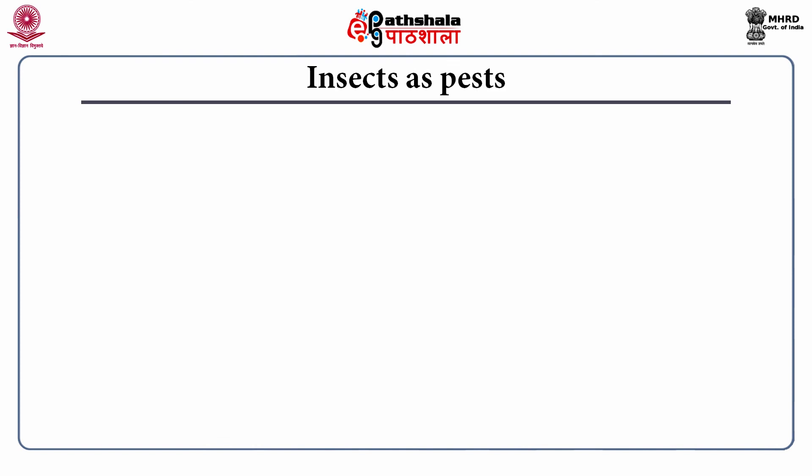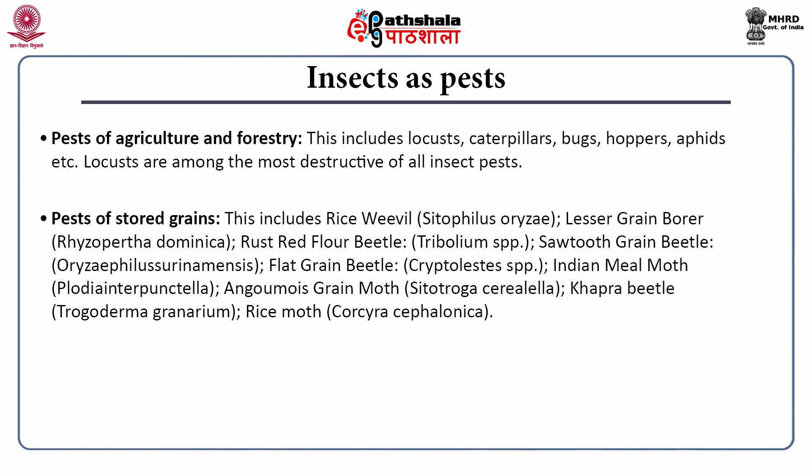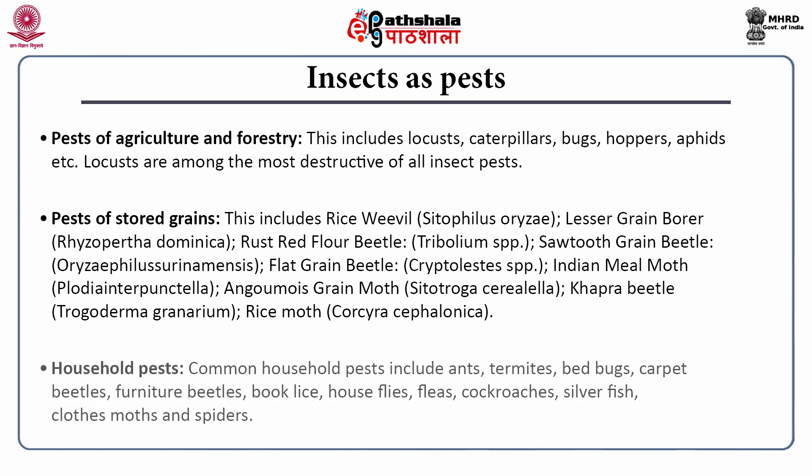Insects are also harmful and, as pests, are a serious menace to society and agriculture. Pests of agriculture and forestry mostly include those from Lepidoptera and Dipteran orders, and also include locusts, bugs, hoppers and aphids. Locusts are among the most destructive of all insect pests. Pests of stored grains include rice weevils, grain borers, rusty red flour beetles, flat grain beetles, Indian meal moths and khapra rice moths. Household insect pests include ants, termites, bed bugs, carpet beetles, furniture beetles, booklice, house flies, cockroaches, fleas, silverfish, cloth moths and spiders.